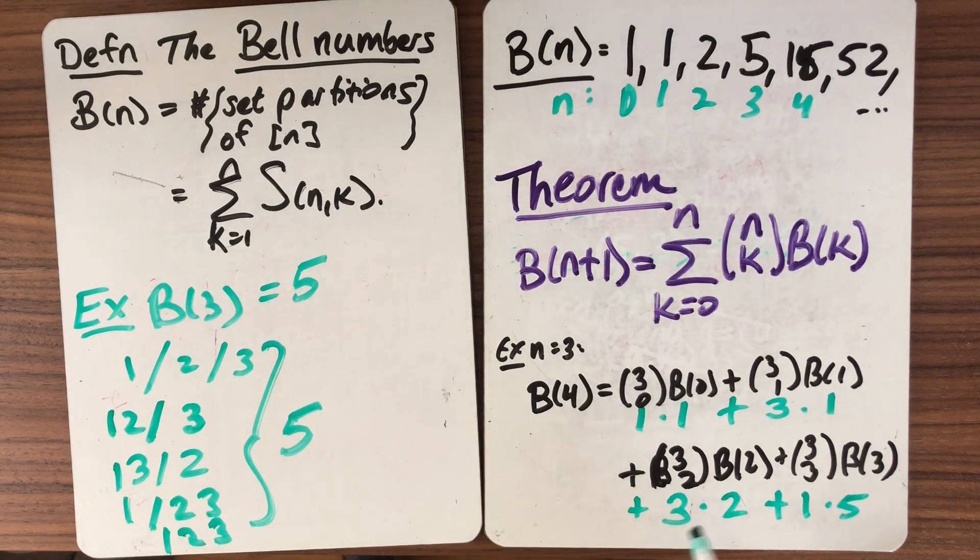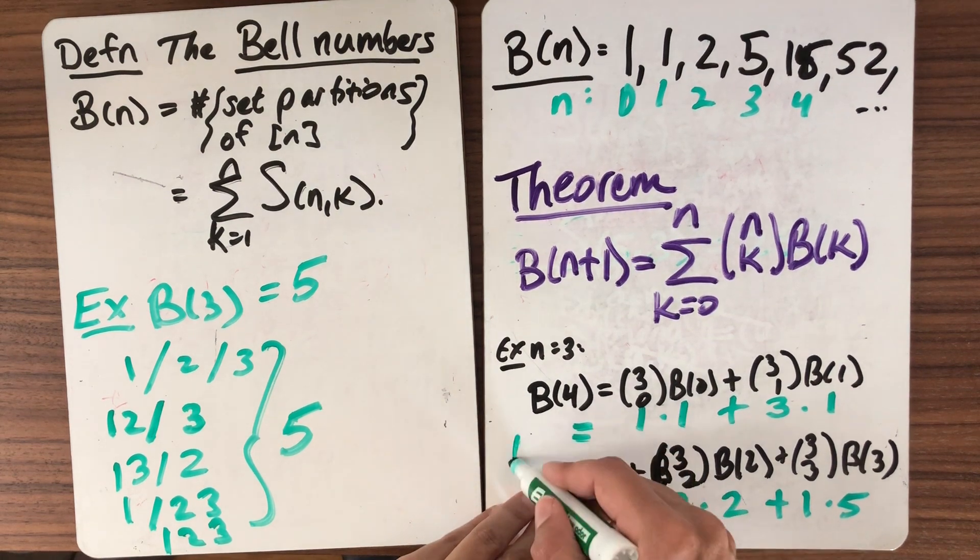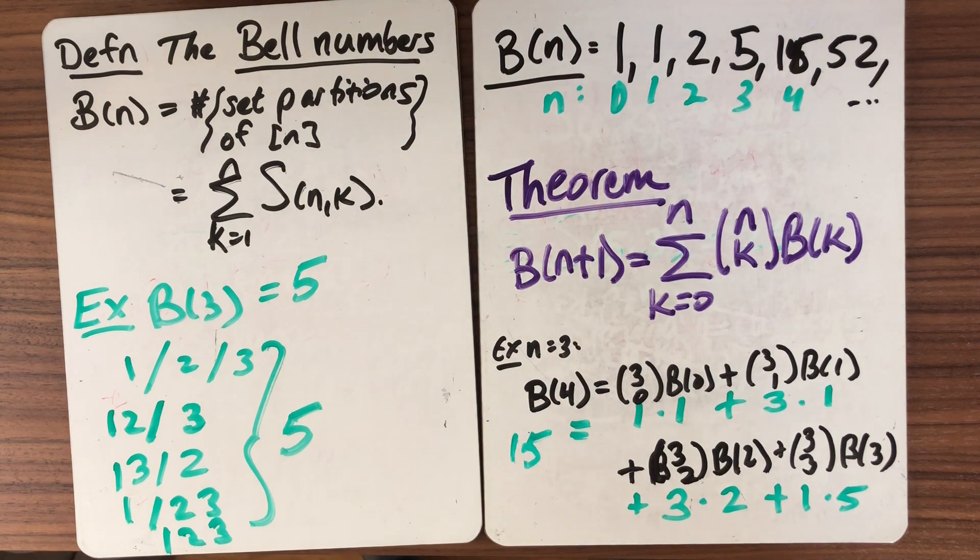So we can add this up, and we can just check. We've got 1 plus 3 plus 6 plus 5, and indeed, that is equal to 15. So the recurrence relationship checks out.